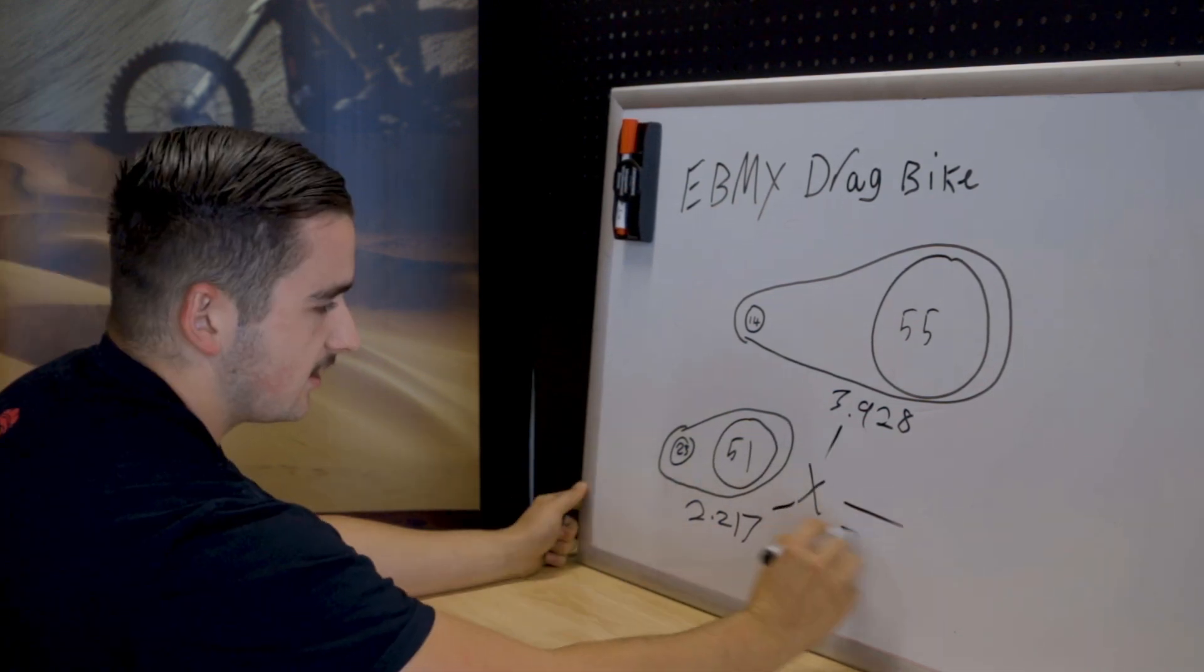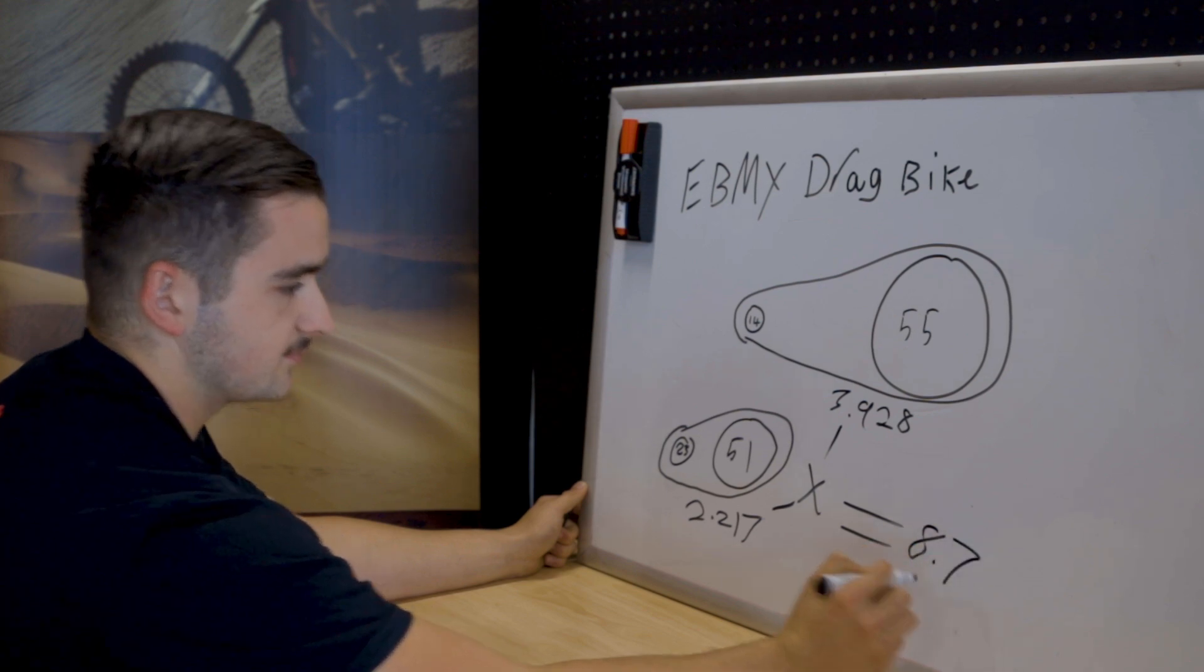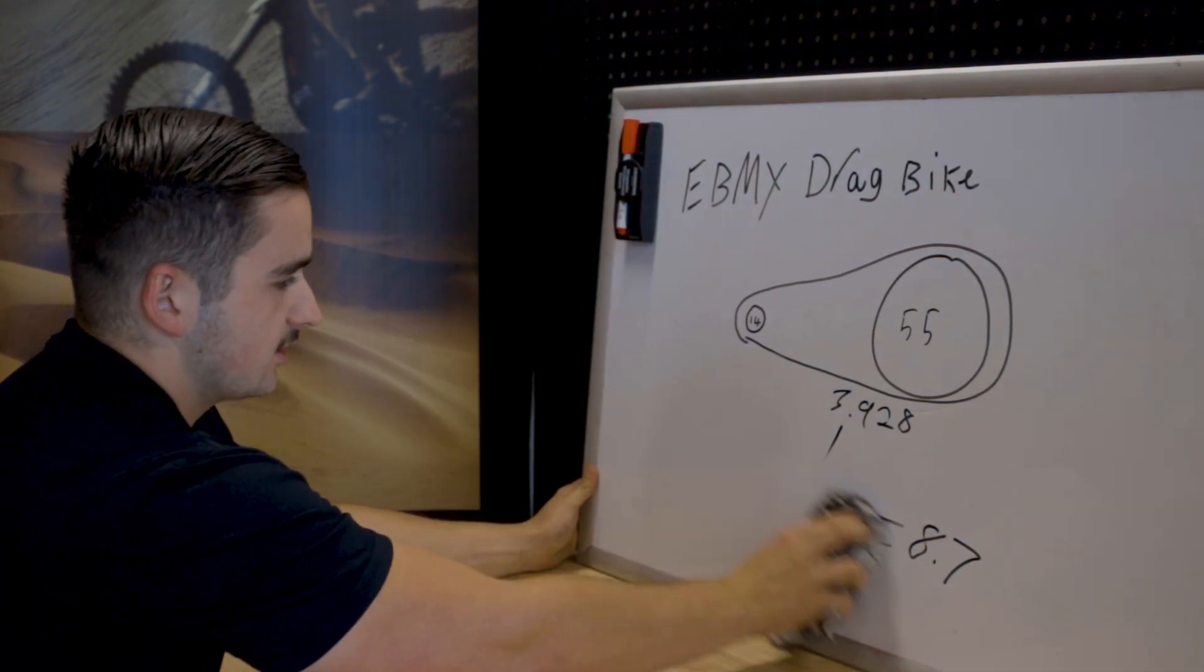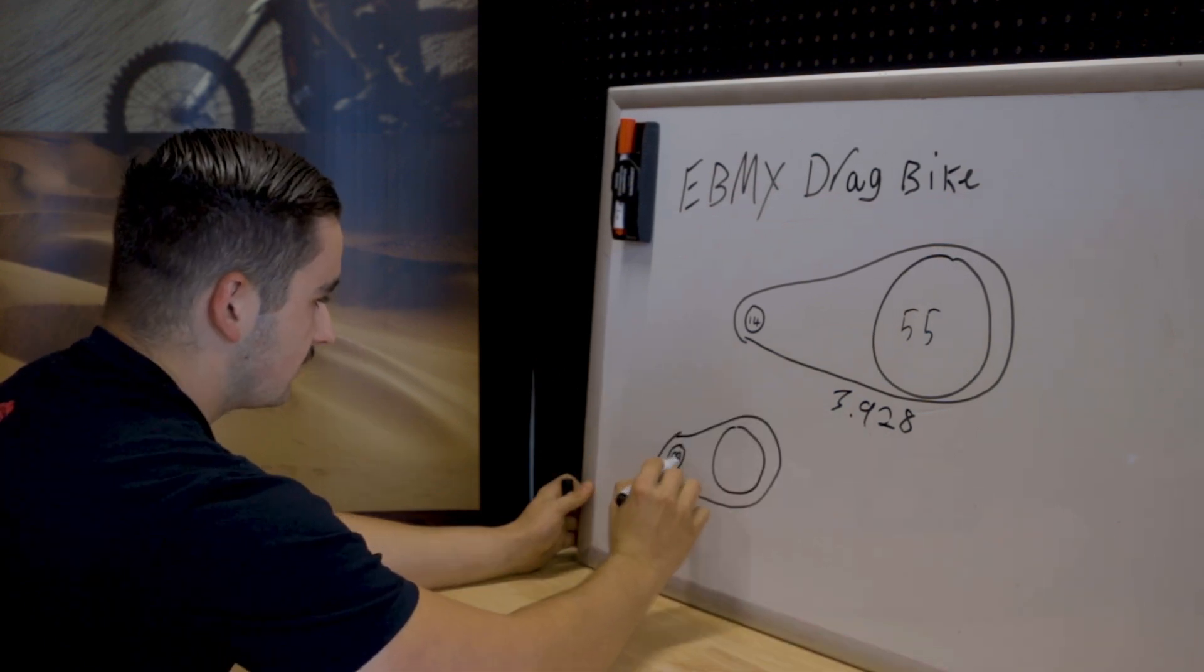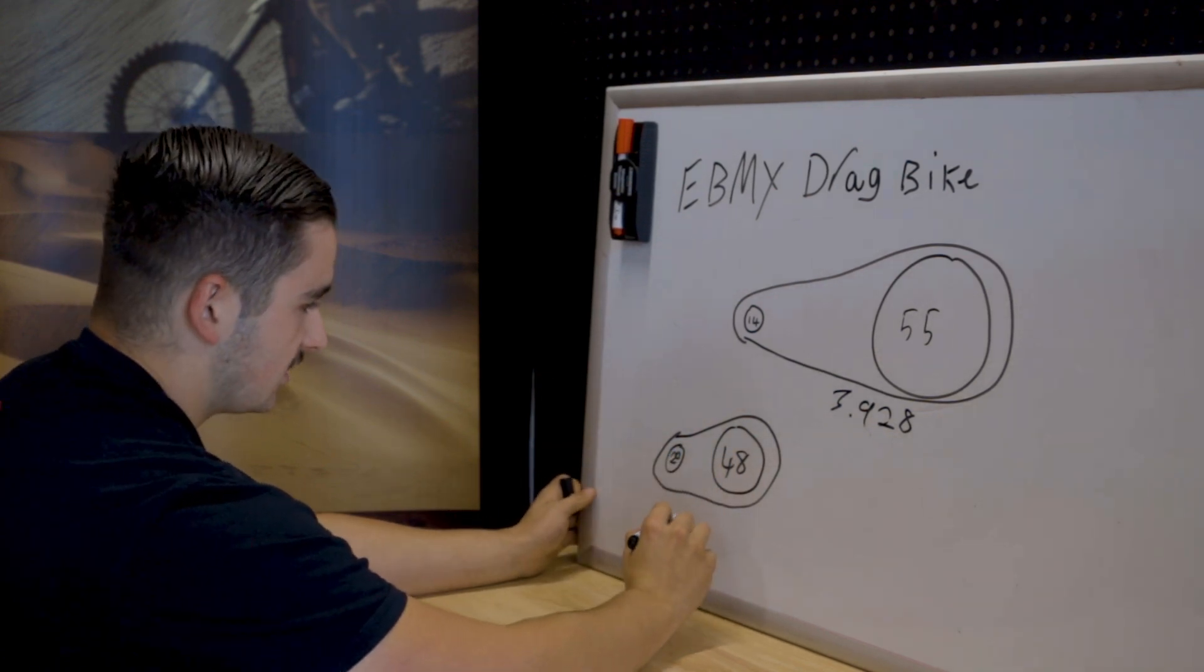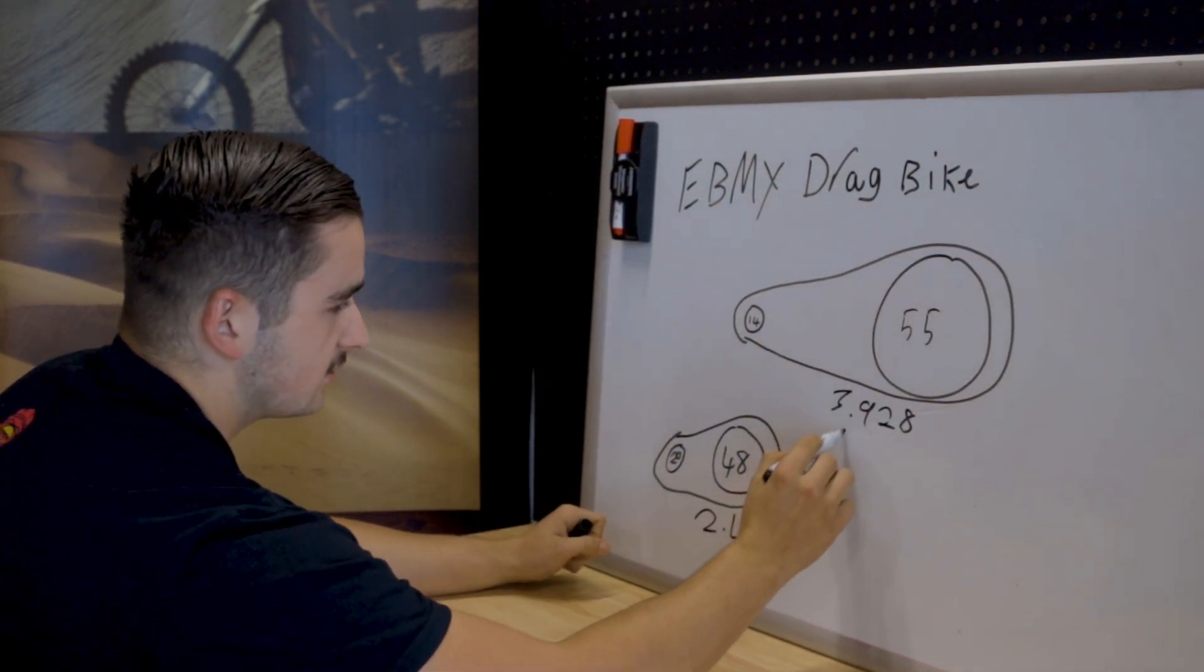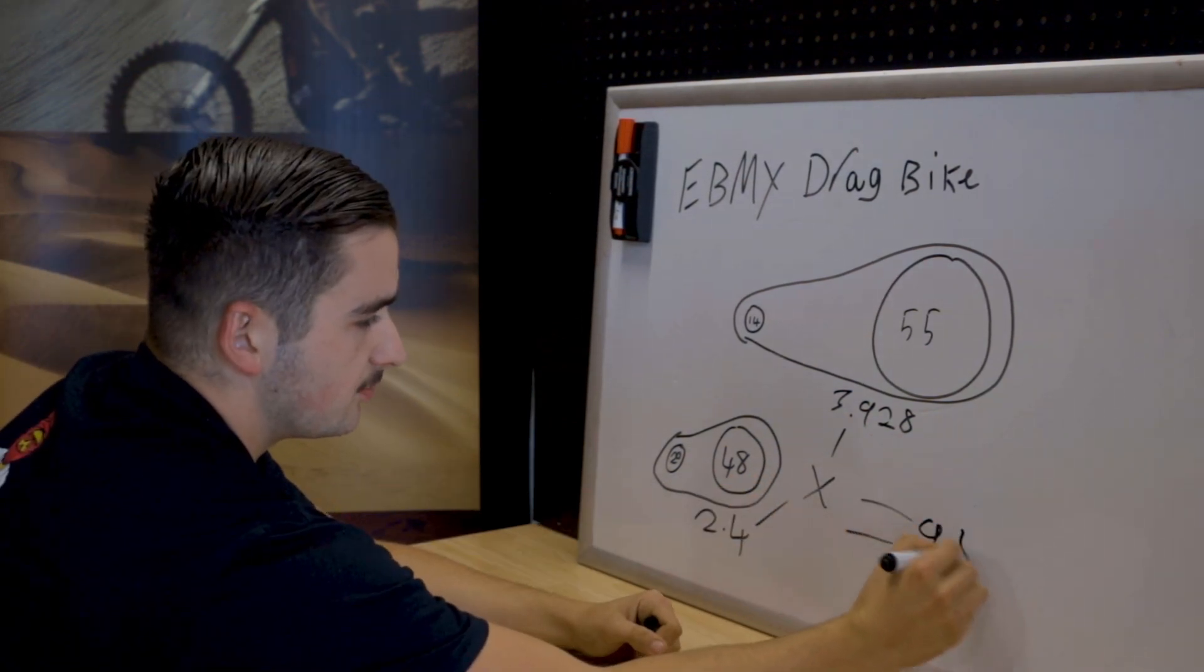Then once again times them together. Final drive of 2.7. So then let's do the 2.19 dirty bike conversion for the Suron which is a 20 in the front and a 48 in the rear which gives us 2.4 and once again times them together which gives us a final drive of 9.4.